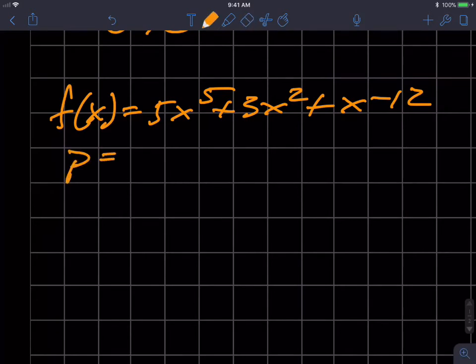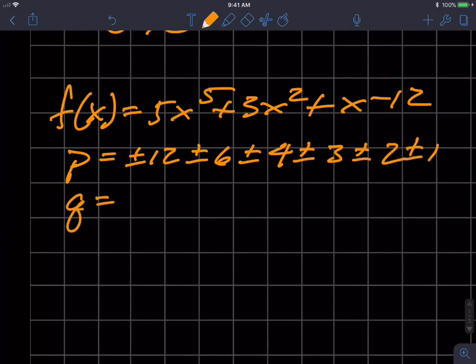So let's figure out my p's first or possible numerators. Plus or minus 12, plus or minus 6, plus or minus 4, plus or minus 3, plus or minus 2, and plus or minus 1. And the possible q's, since 5 is prime, it's only plus or minus 1 and plus or minus 5.